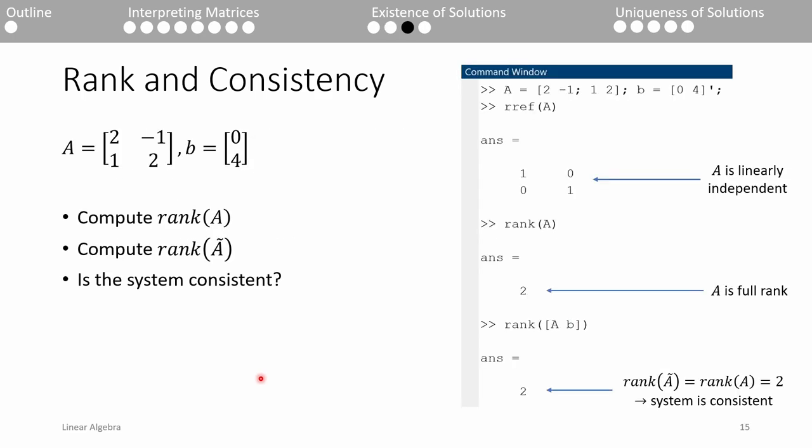I know I just threw a lot of definitions at you, so let's do an example to clarify some things. Given this particular system, we want to find the rank of A, A tilde, and the system's consistency. We have a 2x2 A matrix, so we could do all of this by hand. For brevity, it's best to do this in MATLAB. To find the rank of A, I entered the A matrix into MATLAB, then row-reduced it using the RREF function, which I'll link to in the video description. We can see from the row-reduced echelon form that we have a pivot in each row, so each of the columns of A is linearly independent. That means the rank of A is 2. We can confirm this using the rank function. Now we need to find the rank of A tilde. I used the rank function again, but this time I told MATLAB to find the rank of the augmented A matrix. Since the rank of A tilde is also 2, the system is consistent and at least one solution exists. Note that this doesn't tell us what the solution is, only that there's at least one solution.